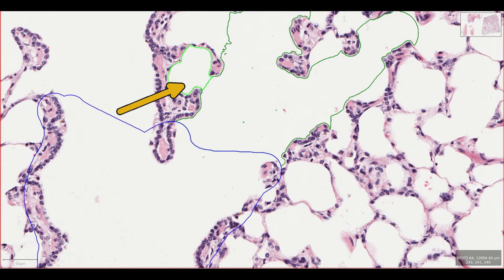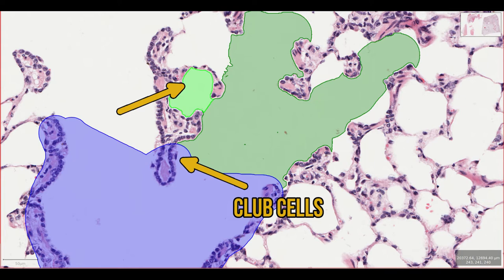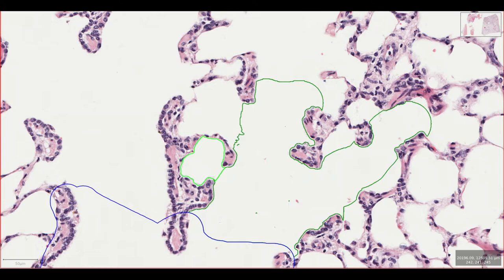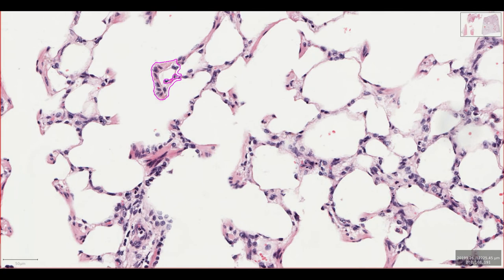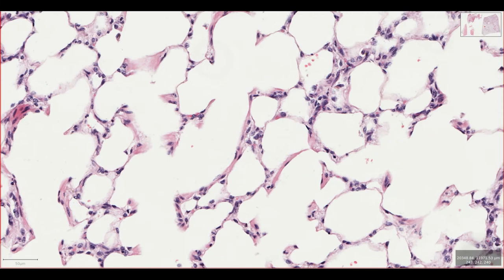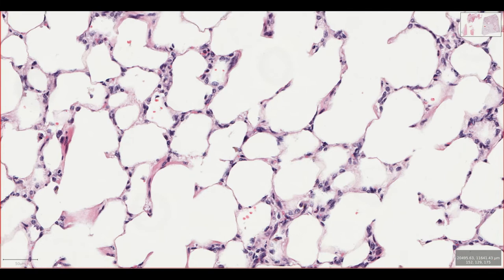The epithelium of the respiratory bronchioles is mainly composed of club cells which secrete surfactant, act as stem cells to replenish the epithelium, and contain enzymes that can detoxify noxious substances. Respiratory bronchioles lead to alveolar ducts which are fiendishly difficult to spot, but we can still make them out as their walls contain small amounts of smooth muscle. These alveolar ducts open out into alveolar sacs which form the bulk of the lung parenchyma and are the main area where gas exchange takes place.